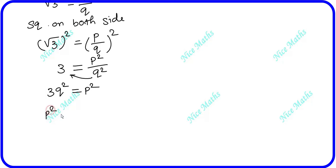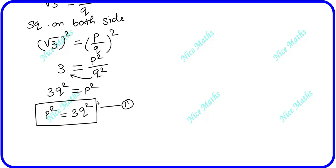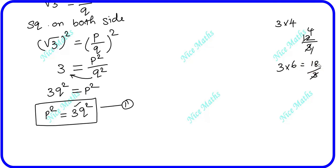So we get p² equal to 3q². This is equation one. Now, 3 multiplied by q² means p² is divisible by 3. For example, take the number 4: 3 into q² gives 12, which is divisible by 3. Take 6: 3 multiplied gives 18, divisible by 3. So p² is divisible by 3, meaning 3 divides p².